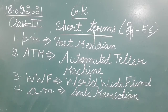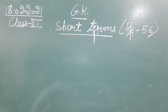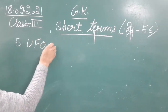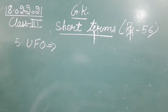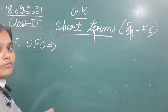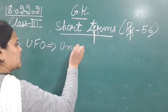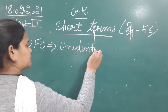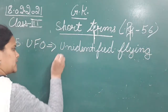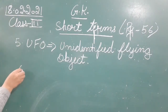Moving next to the fifth acronym, that is UFO. The full form of UFO is 'Unidentified Flying Object'. We mostly use UFO to refer to unidentified spaceships or flying objects.